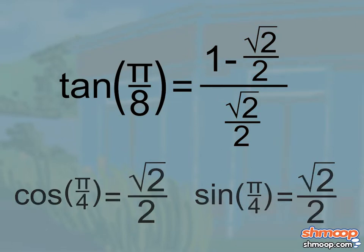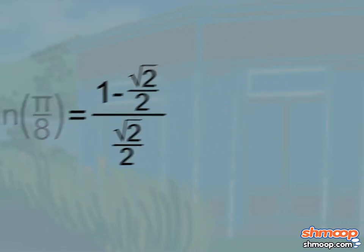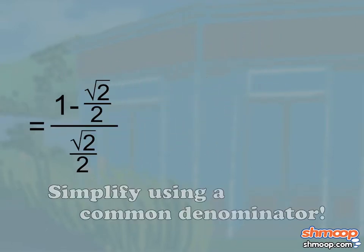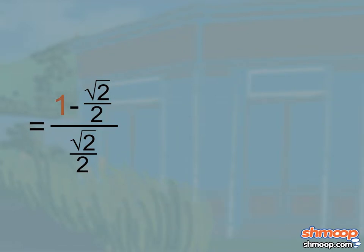Having too many terms just brings trouble. So first, to simplify the numerator, we can put both terms under the same common denominator. Let's do this by multiplying one by two over two to get two over two minus root two over two.